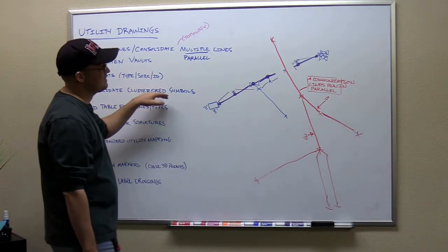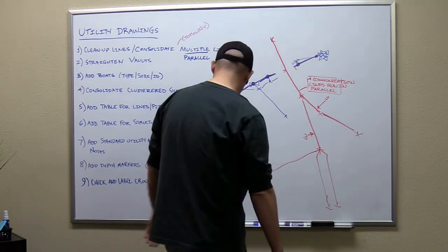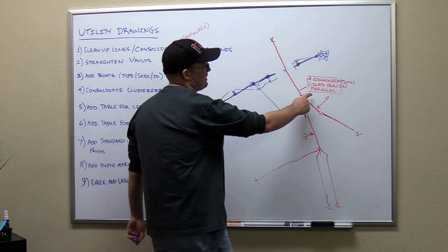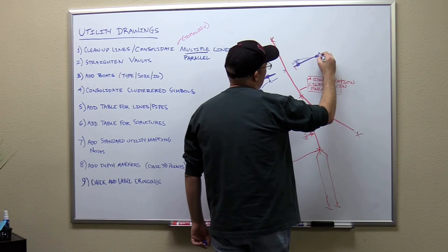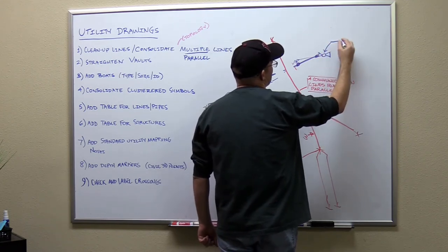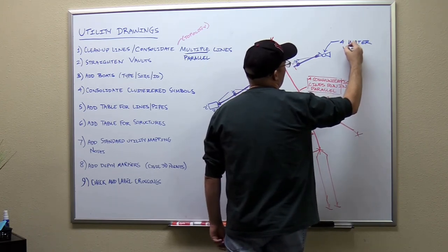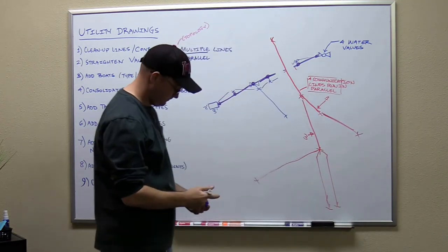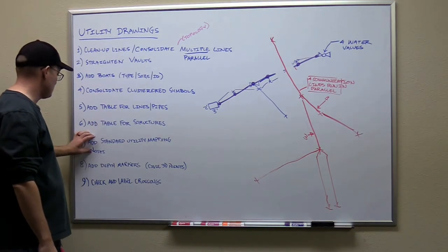Where we have symbols that are clustered together — this depends on your scale — if you zoom in and these symbols overlap, like for our water valve, you're going to do the same thing you do with the lines: show one symbol and then have a little leader that says 'four water valves' or 'four gas valves' or whatever. I'm going to give you the tables and work on the notes.